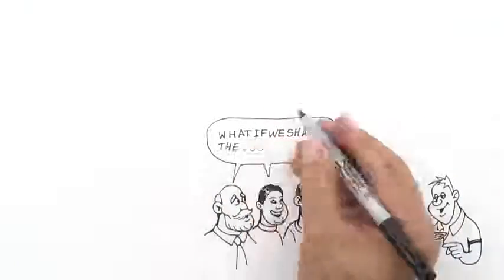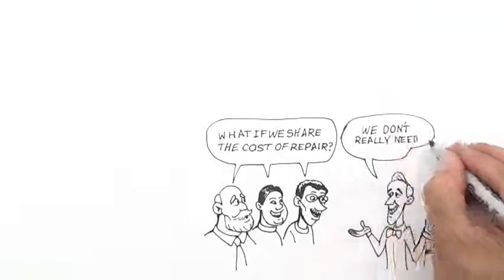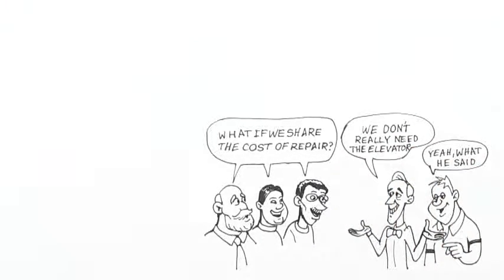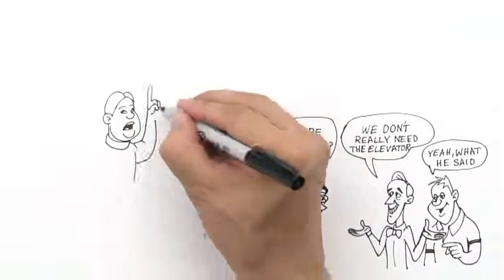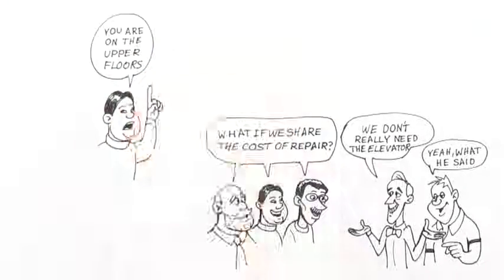Charlie, Dave, and Edward approached Bob and Alex, but the latter told them that they didn't really need the elevator, so they would have to cover the full cost. Charlie agreed, but argued that Dave and Edward should pay more, since they live on upper floors and have more need of my services.